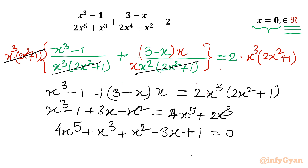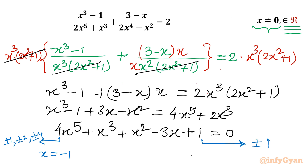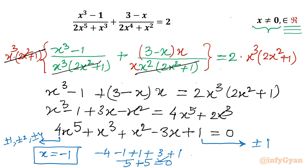This is a quintic equation so we will find 5 solutions. Let us use the rational root theorem to find eligible factors of the constant term 1, which gives plus or minus 1. The leading coefficient factors are plus or minus 1, plus or minus 2, and plus or minus 4. If I put x equal to 1 it doesn't satisfy. If I put x equal to minus 1: minus 4 minus 1 plus 1 plus 3 plus 1 gives minus 5 plus 5 equal to 0. So x equal to minus 1 is a solution of this quintic equation.